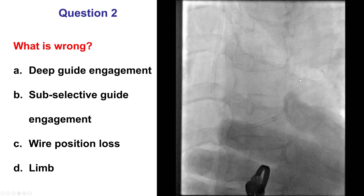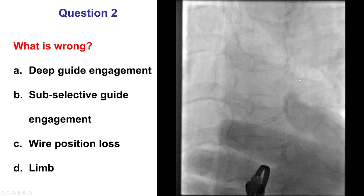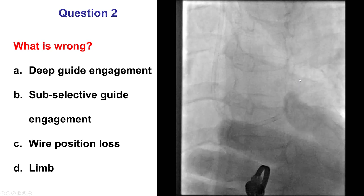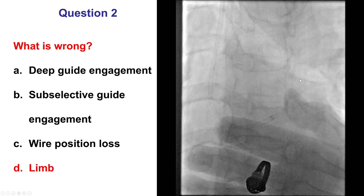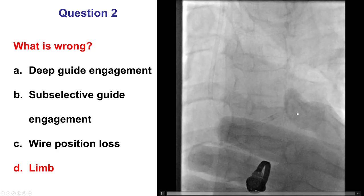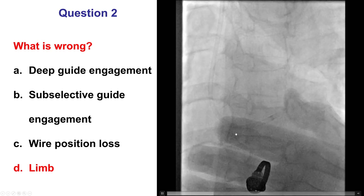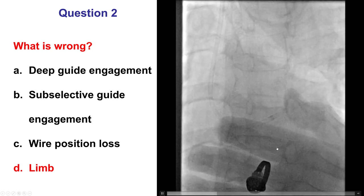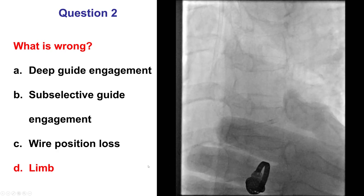Second question: what is wrong in this image? The options are deep guide engagement, subselective guide, losing wire position, or a limb in the field. The answer is the limb — what we're seeing is the patient's hand in the picture. We don't want anything in the field, not only because it interferes with image quality, but also because it increases radiation dose for both the patient and the operator. Both patient and operator limbs need to be outside the x-ray field.